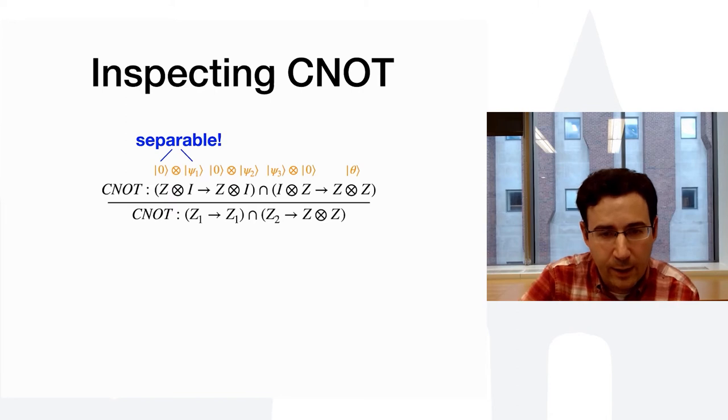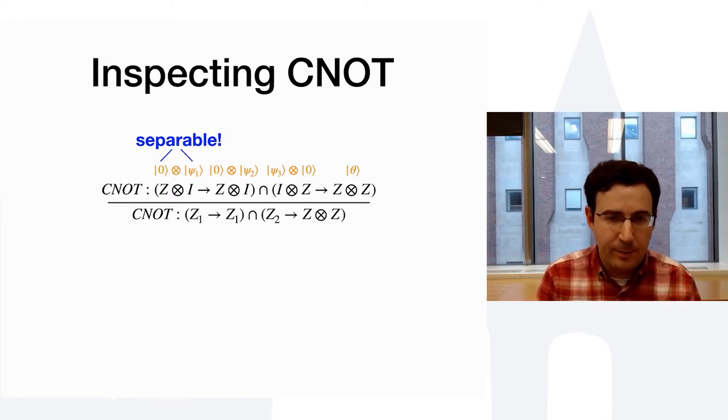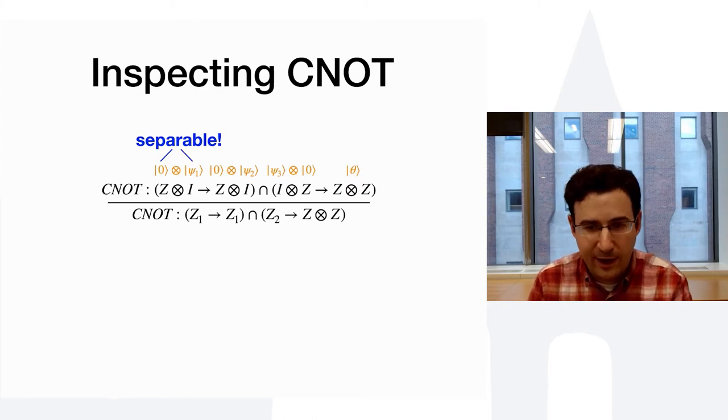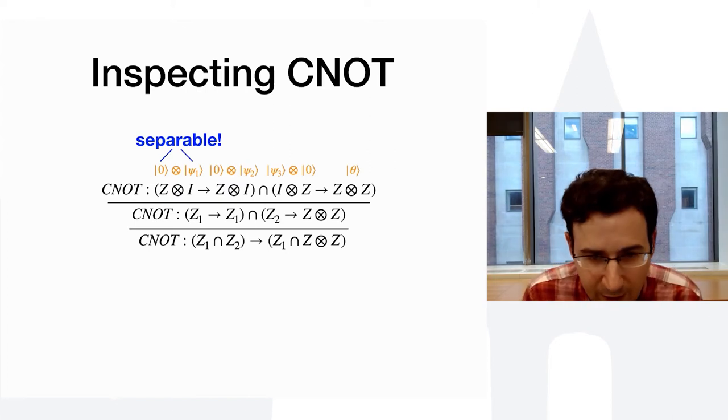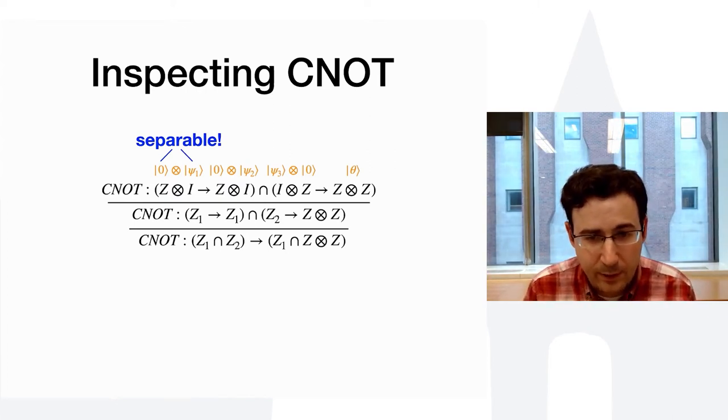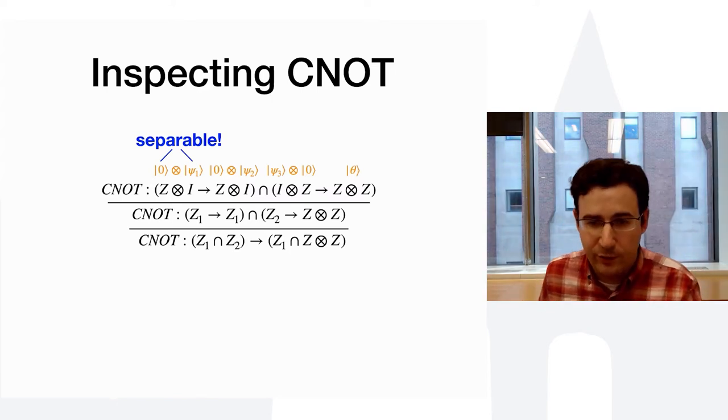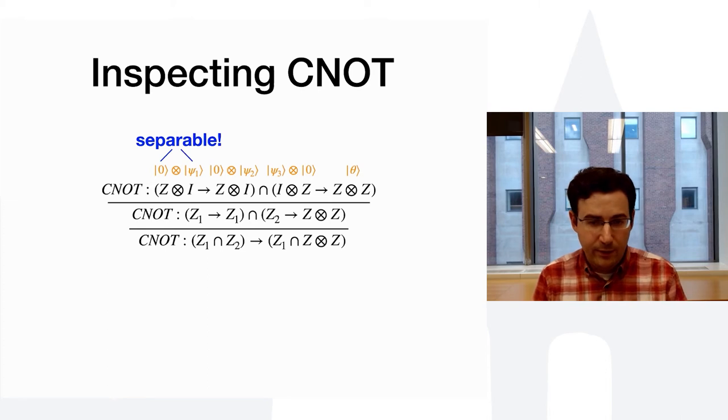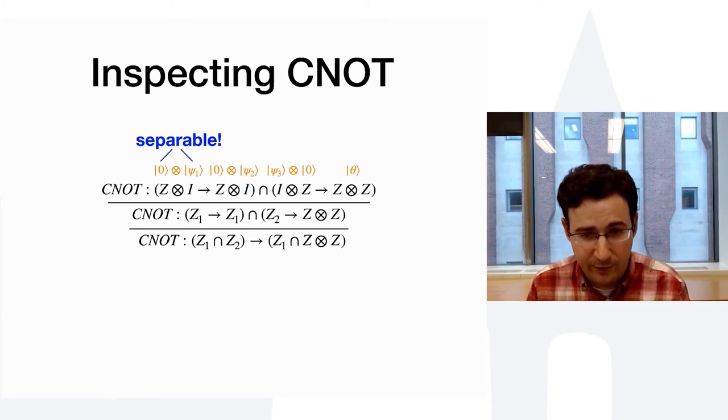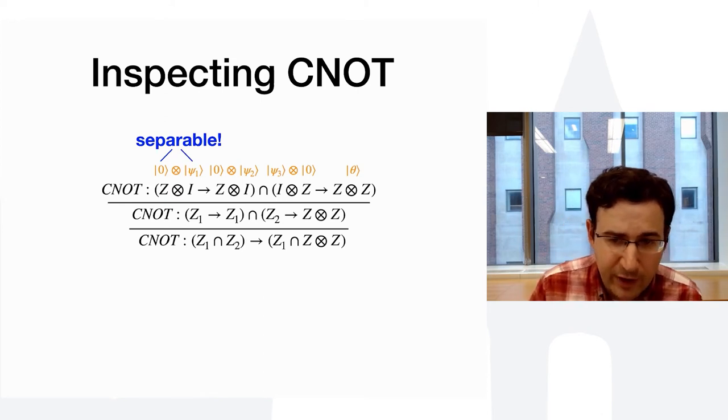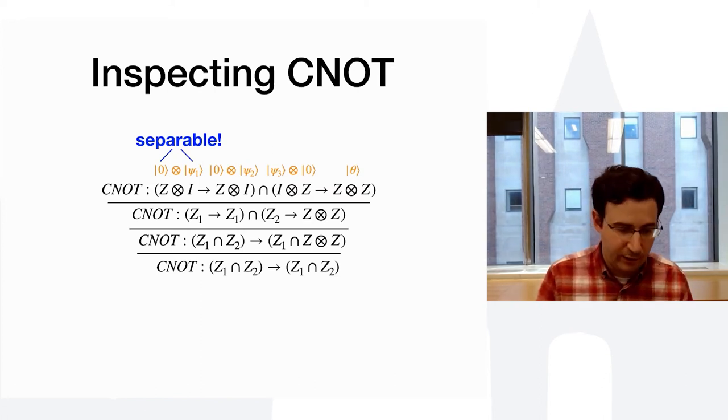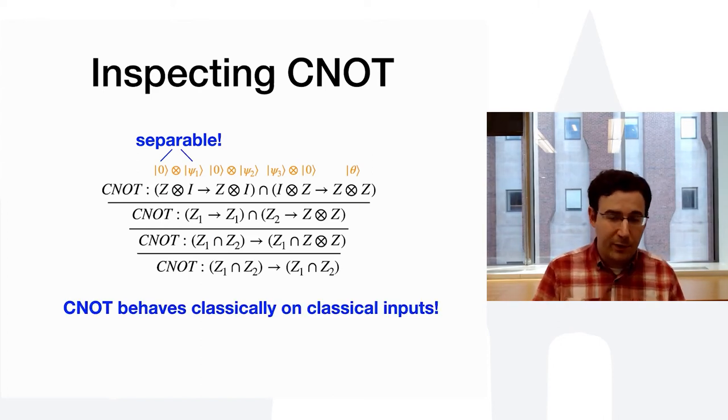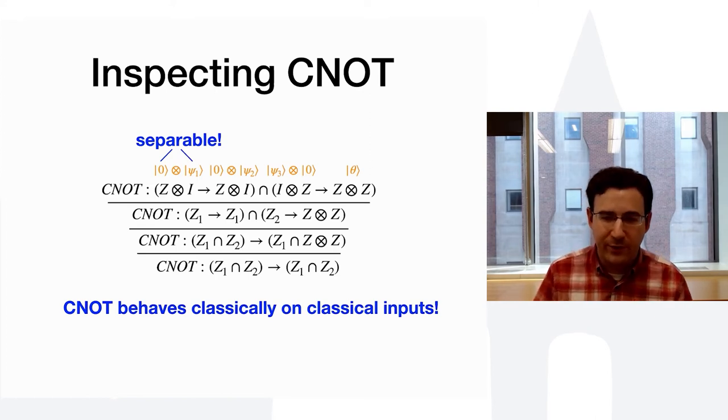So, I'm going to write Z1 for the type that says the first qubit is in the zero basis, or in the Z basis. And that allows me to simplify this type a little bit. Now, I'm going to use basically a subtyping rule, which allows me to distribute the intersection over arrows. And now we have that both qubits being in the computational basis states gives me a Z1 and a Z times Z tensor Z. And once I know that the first qubit is separable, in this case, obviously, the second qubit is separable. So, what's the outcome here? The outcome here is that CNOT behaves classically on classical inputs.